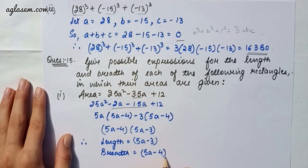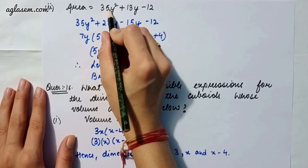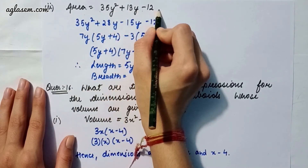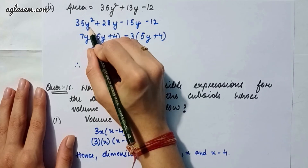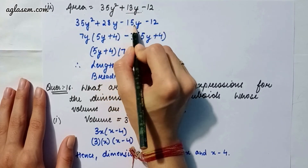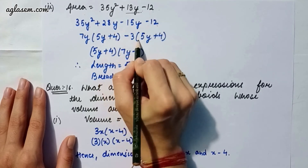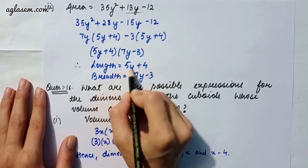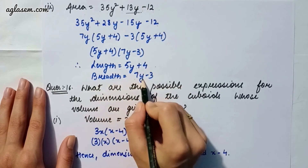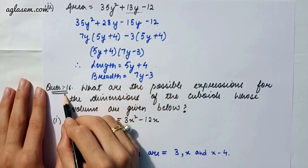Part two: area = 35y² + 13y - 12. We write 13y as 28y - 15y, giving 35y² + 28y - 15y - 12. After solving, length = 5y + 4 and breadth = 7y - 3.